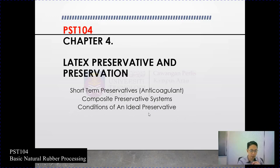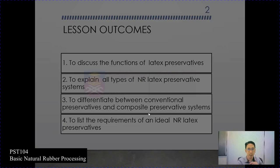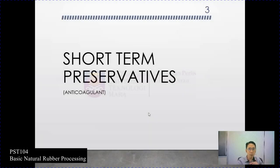Let's take a look at the lesson outcomes for this chapter. First, to discuss the function of latex preservative. Second, to explain all types of NR latex preservative systems. Third, to differentiate between conventional preservative and composite preservative systems. Usually in industry they start to use the composite preservative system because of the demands of end users or end product manufacturers. Finally, to list the requirements of an ideal natural rubber latex preservative.